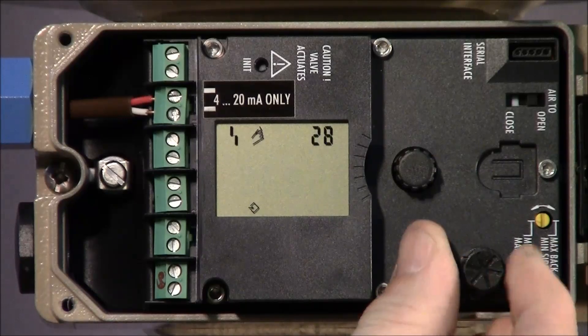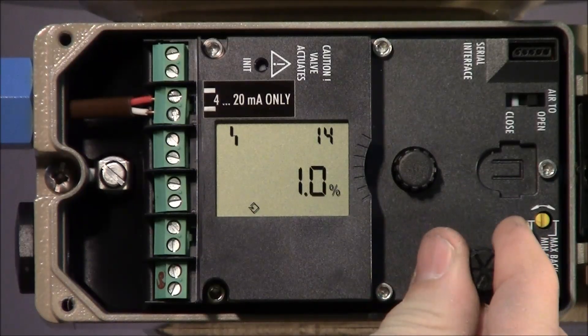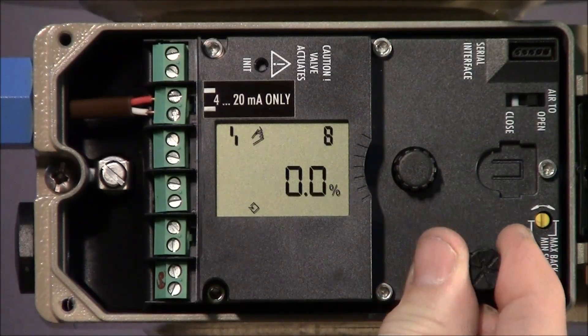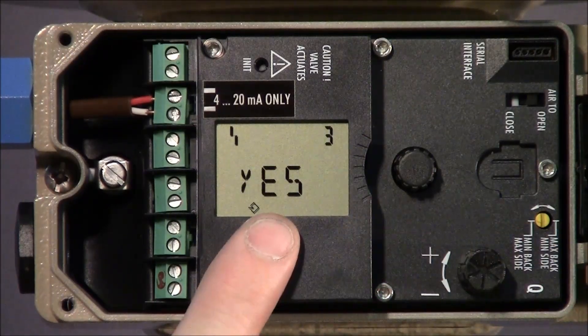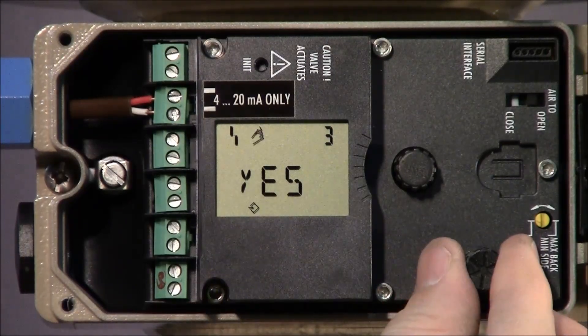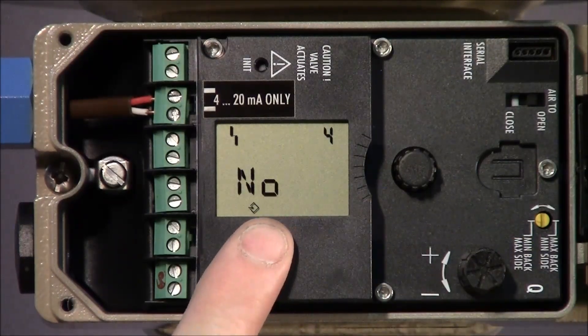We can now begin to calibrate the positioner. To ensure the changes can be made, we'll confirm configuration mode is still enabled by going back to parameter 3 and Yes is still displayed.